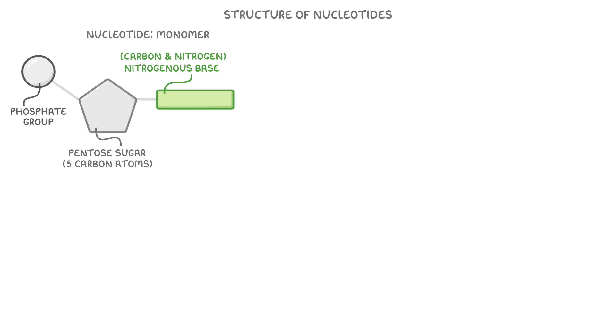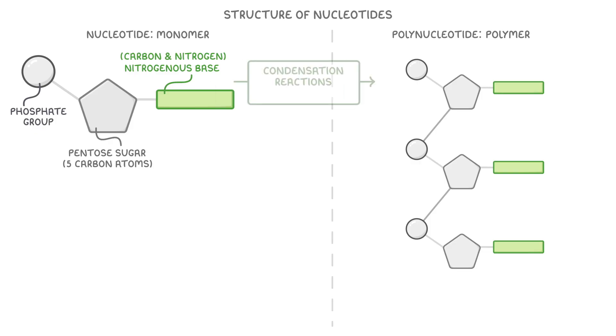Now these nucleotides can join together to form a long chain called a polynucleotide, which is a type of polymer. Polynucleotides are made when nucleotides join together by condensation reactions. This involves the phosphate group of one nucleotide reacting with the sugar of another nucleotide, forming a phosphodiester bond that links the nucleotides together.